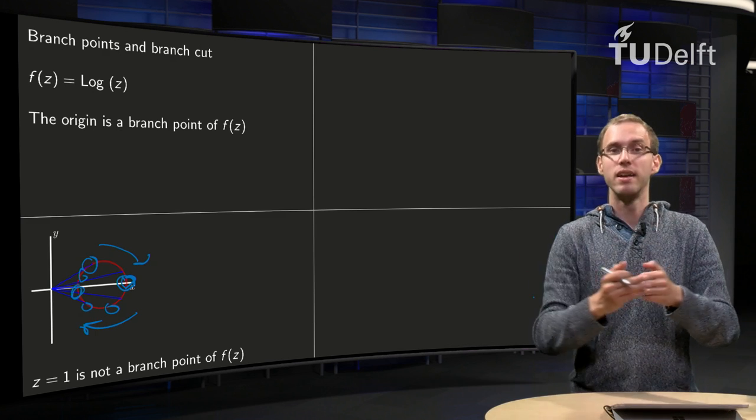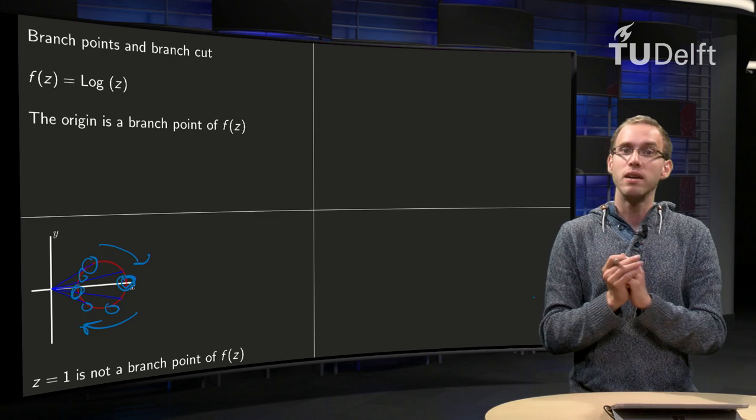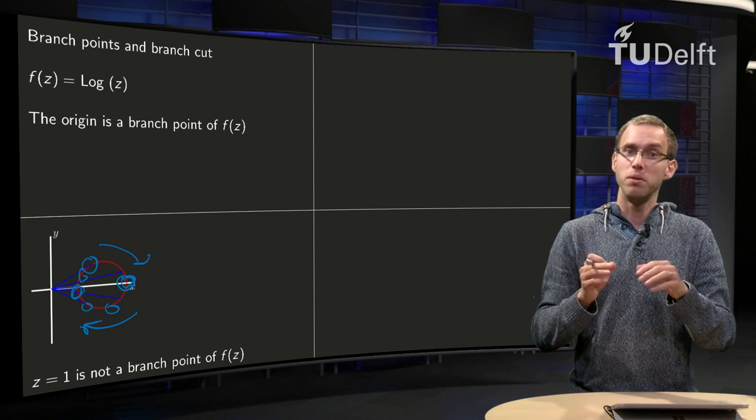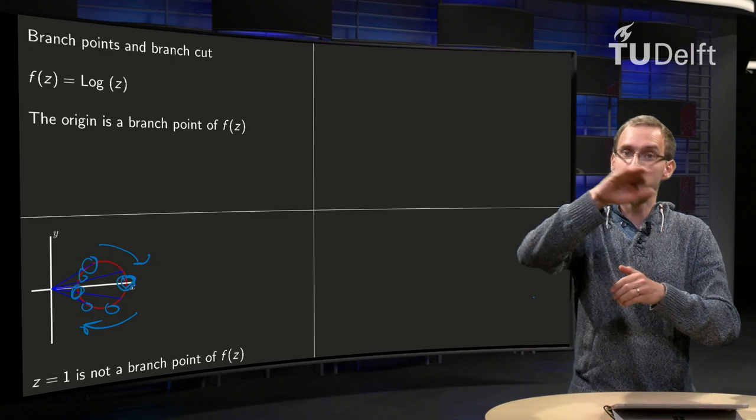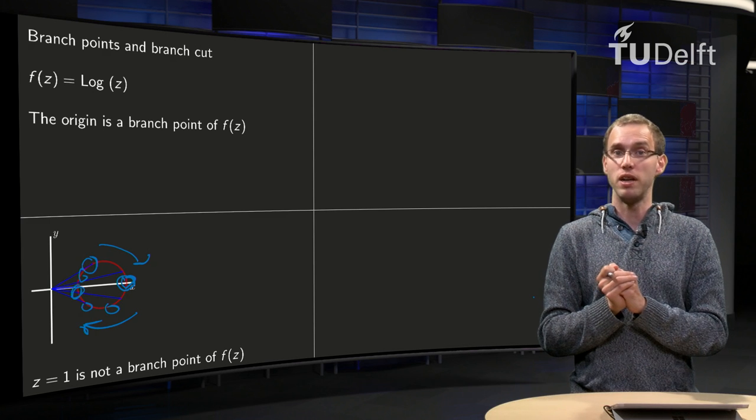If we are back at the pi over 4 and square root of 2 point, then we haven't jumped in the argument. So that means that this point 1 is not a branch point of the log. If you travel around it in some way, you end up in the codomain also at the same place.